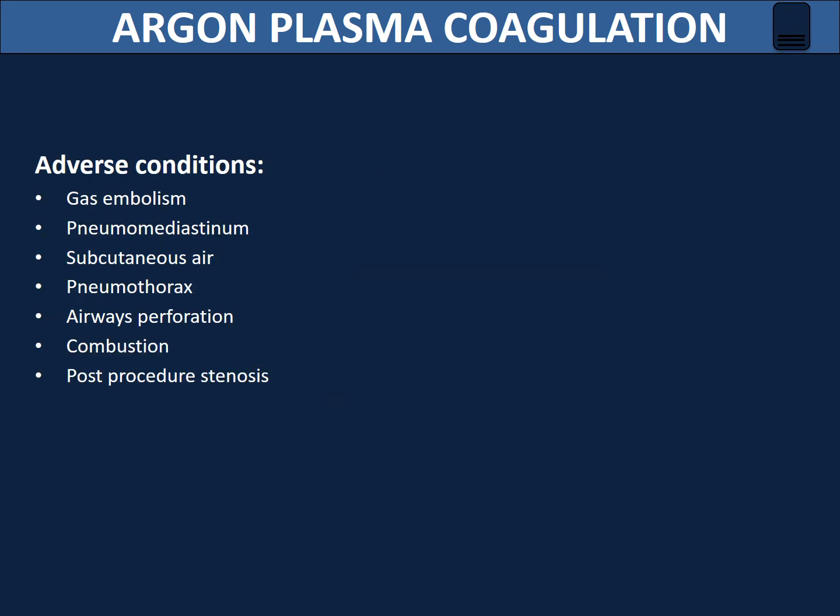Complications are more often related to faulty connections and operator error rather than the malfunction of the unit itself. Most of the complications described here can be avoided by working under visual control, avoiding direct tissue contact with the APC probe, using as low an argon flow as possible, not applying gas too long over the same anatomic location, and ensuring the supplemental oxygen level is below 40%.